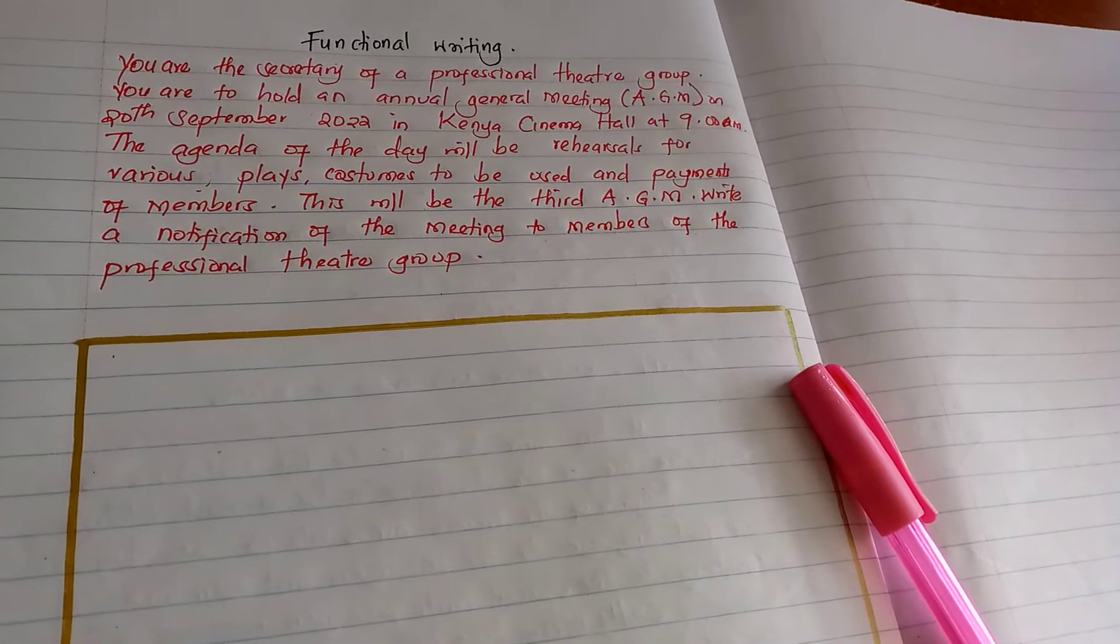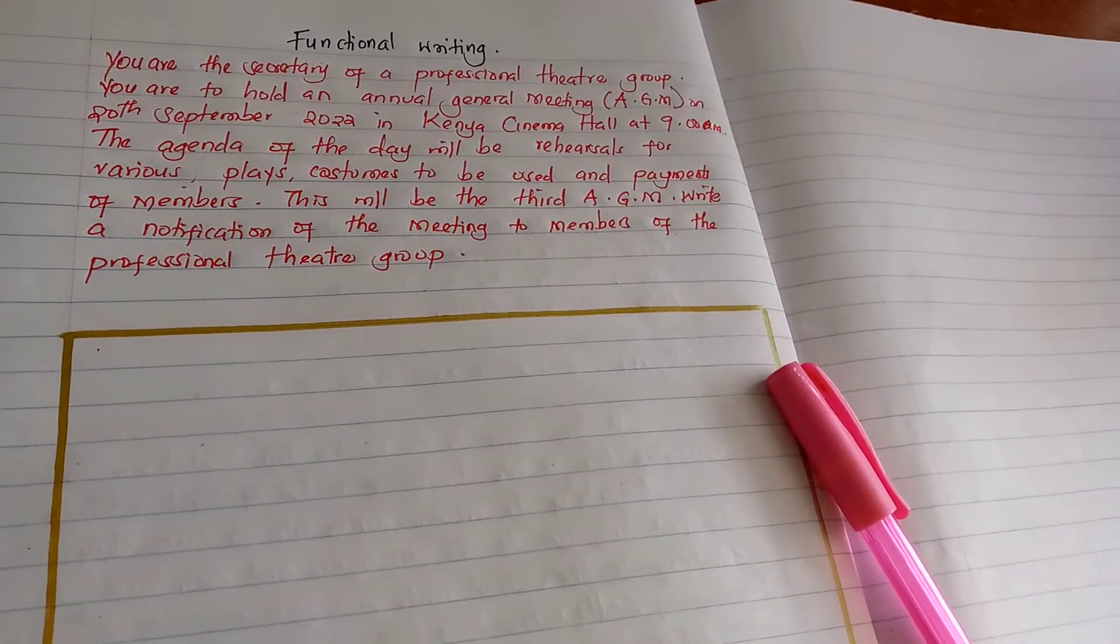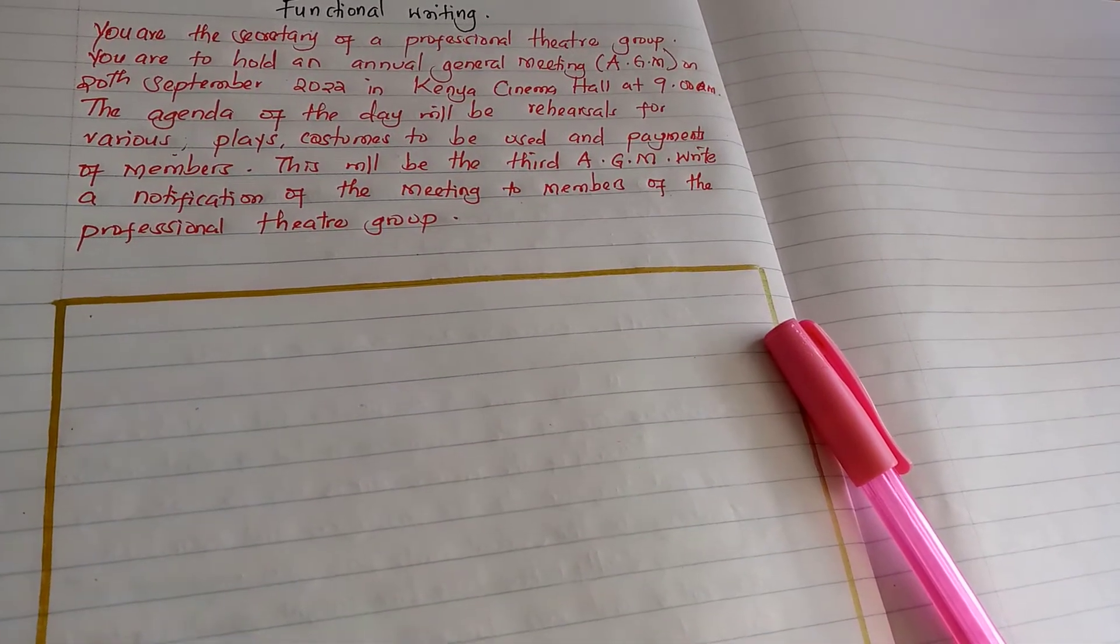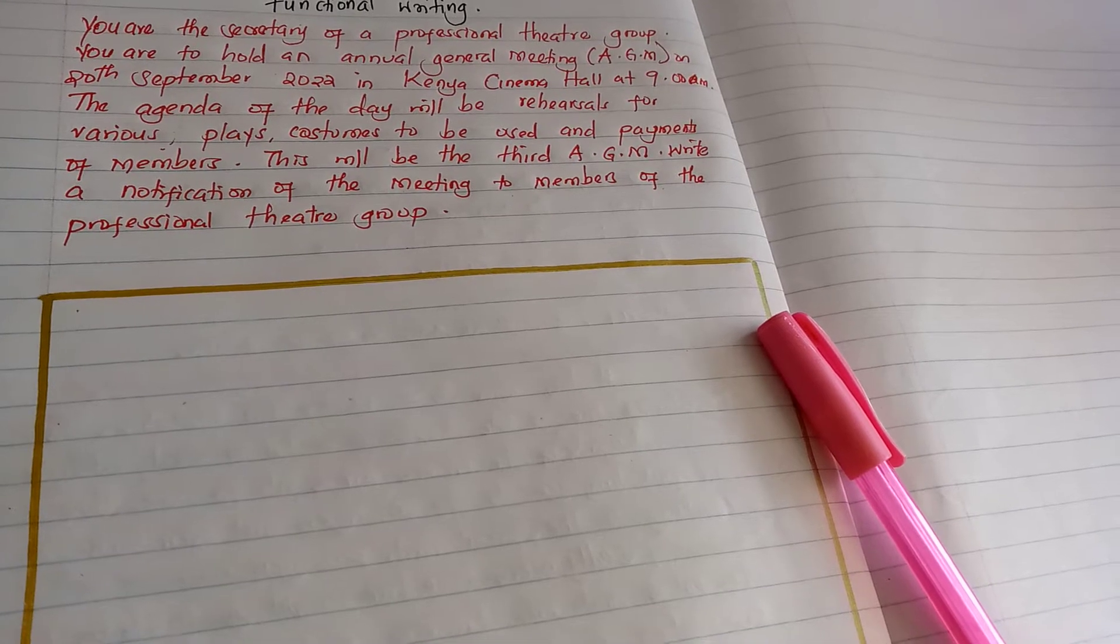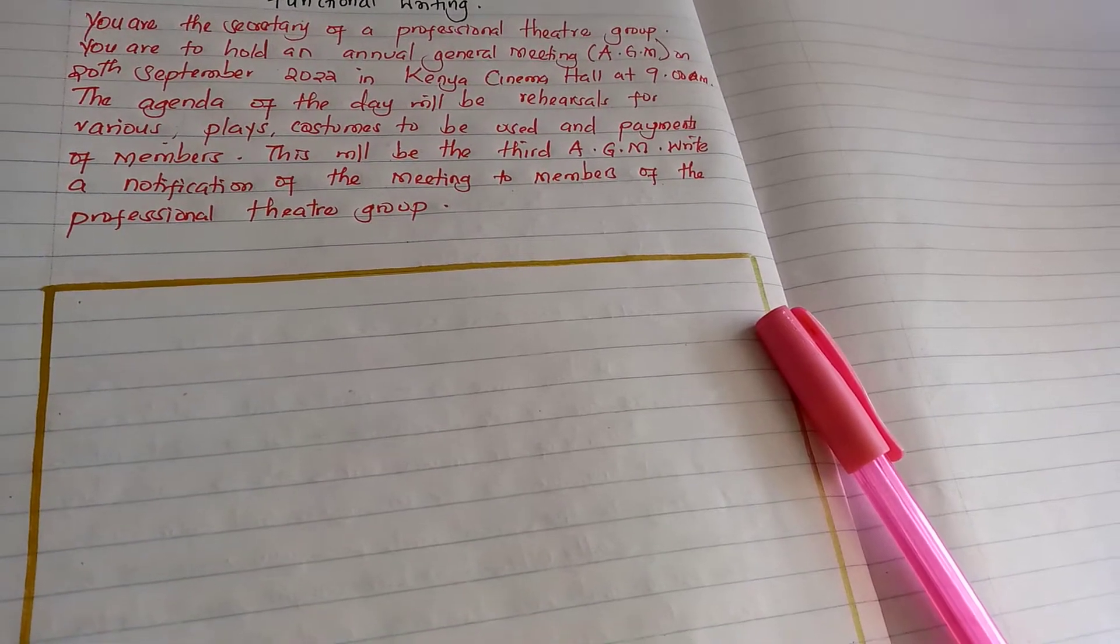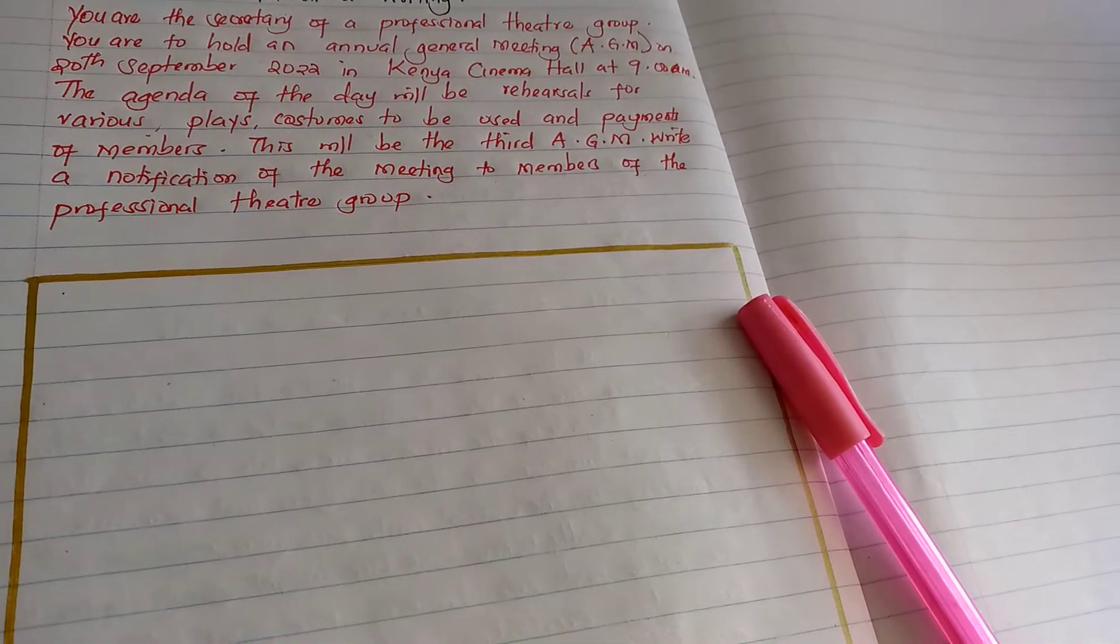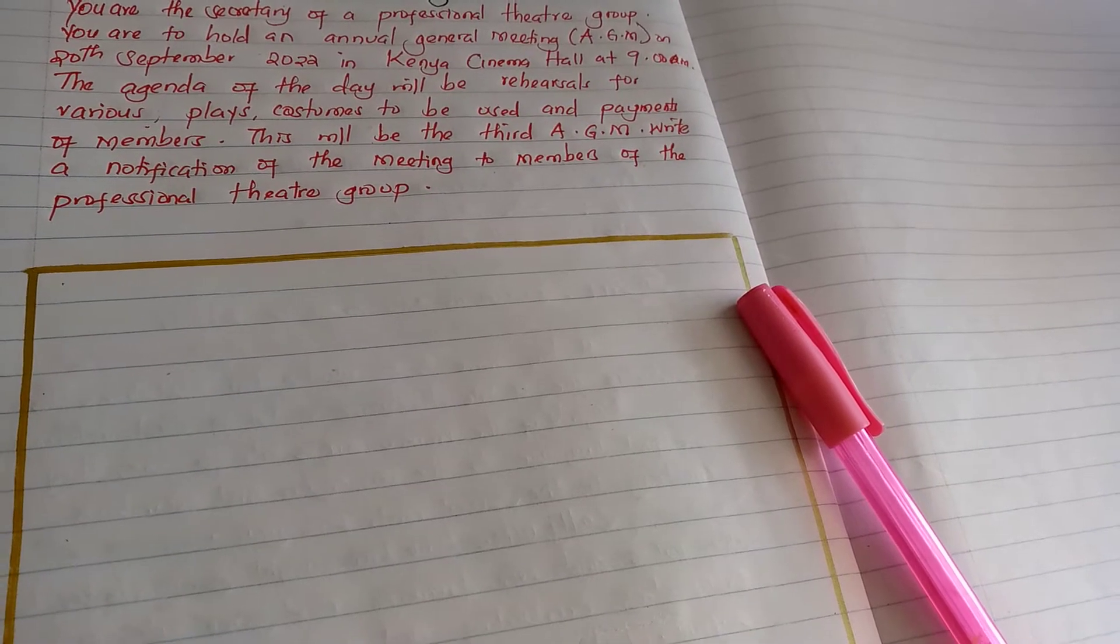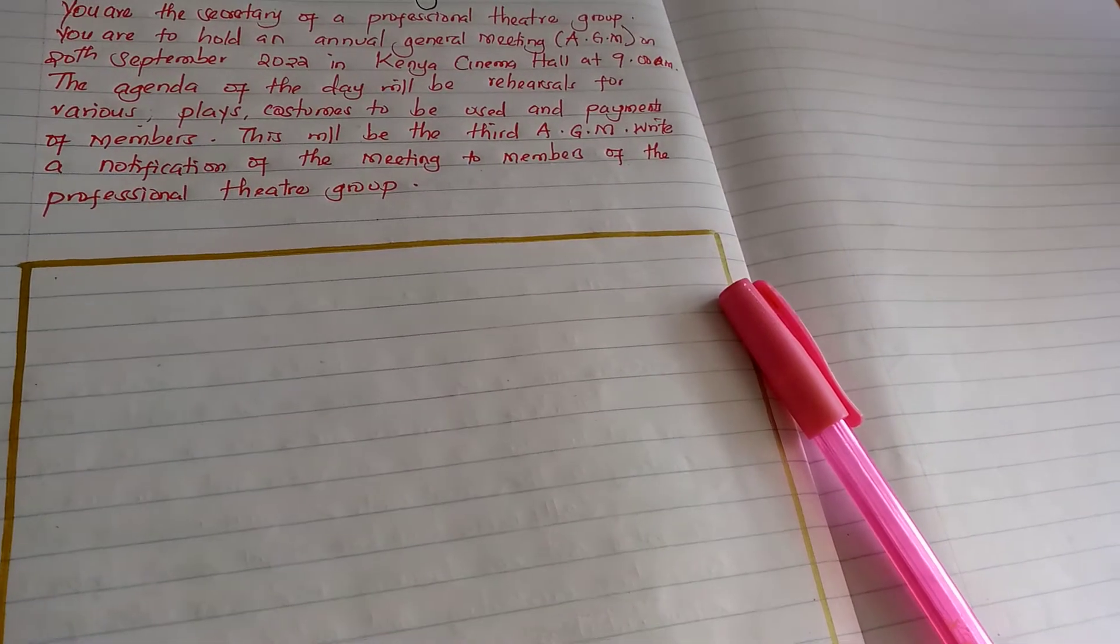You are the secretary of a professional theatre group. You are to hold an annual general meeting, AGM, on 20th September 2022 in Kenya Cinema Hall at 9am. The agenda of the day will be rehearsals for various plays, costumes to be used, and payments of members. This will be the third AGM. Write a notification of the meeting to members of the professional theatre group.